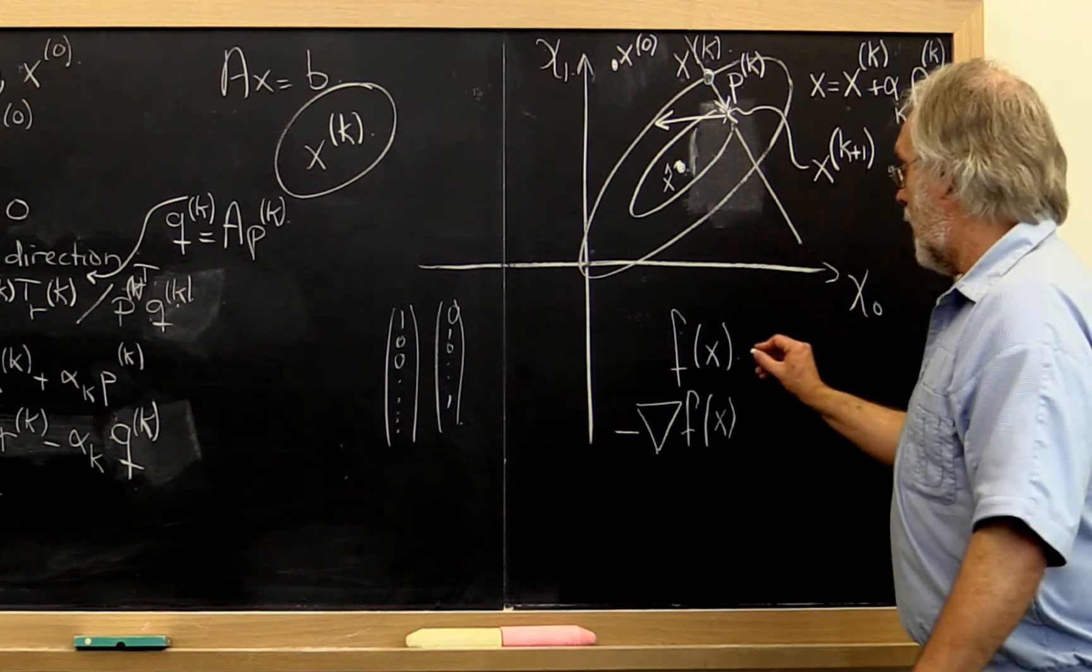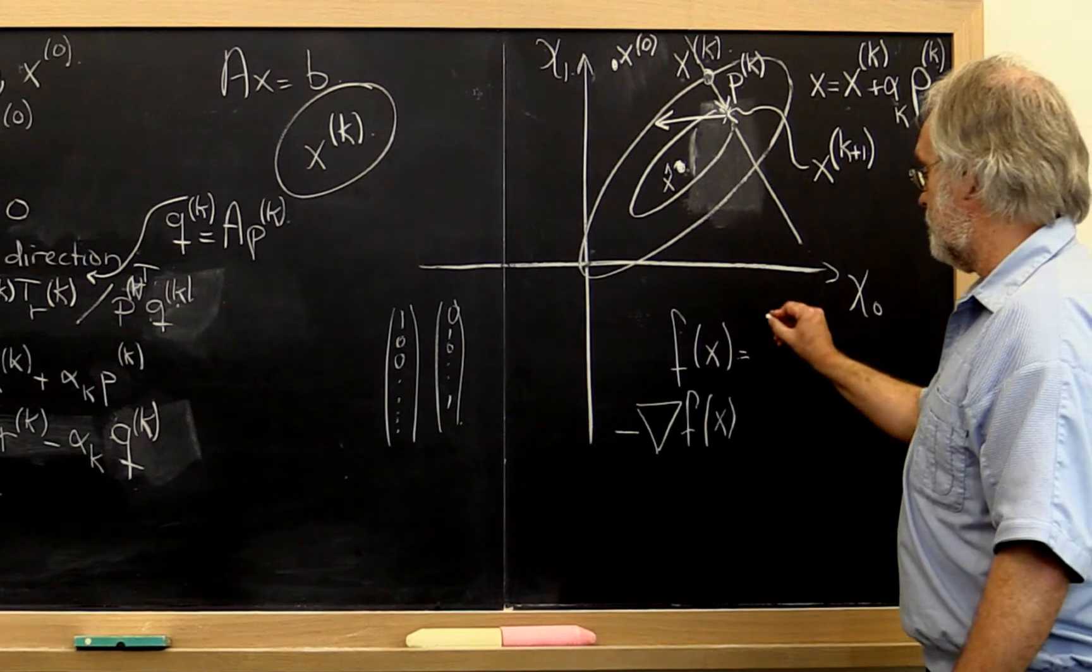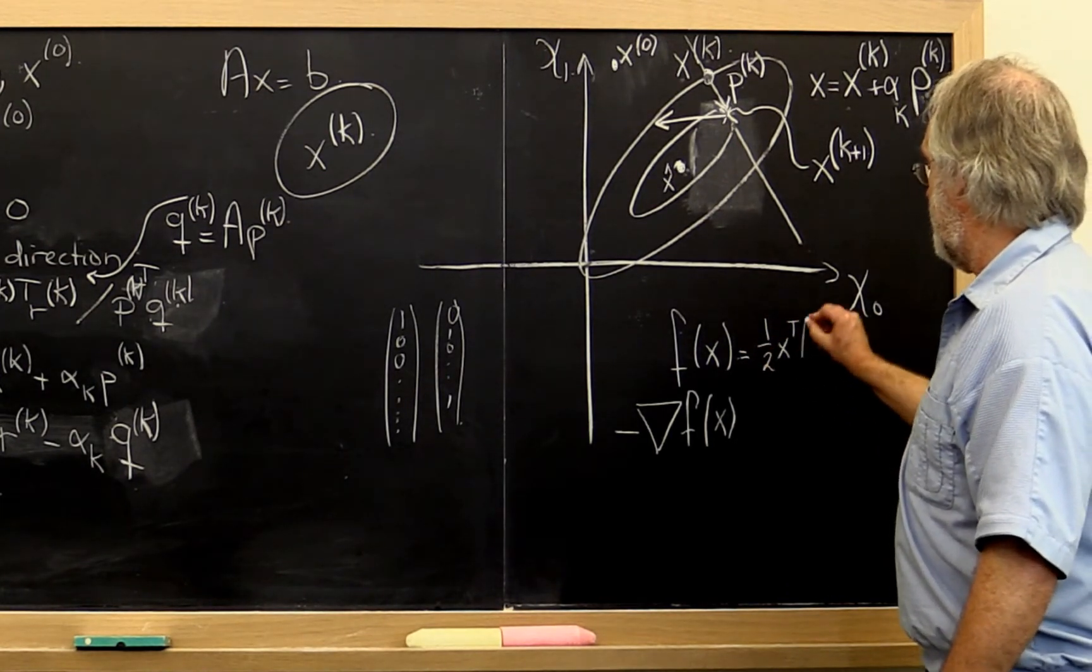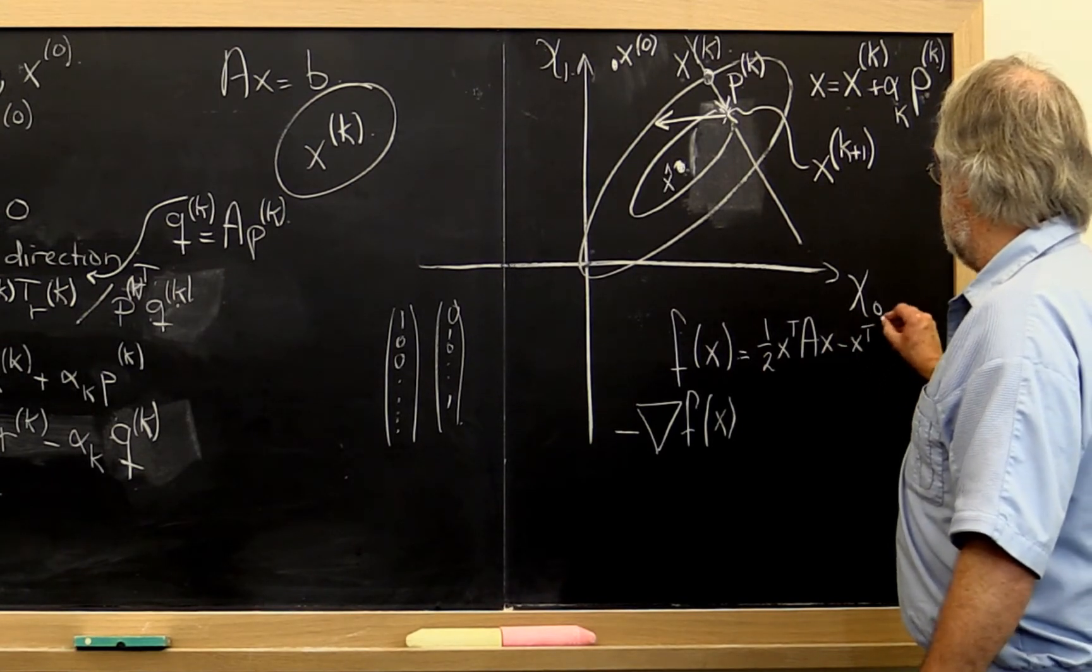Now in our case, our function x had a very special form. It was 1 half x transpose Ax minus x transpose b.